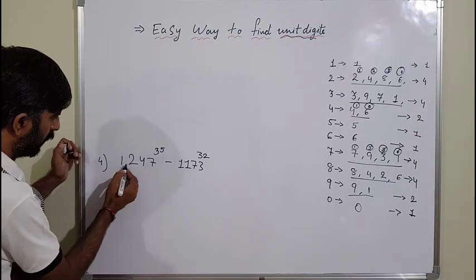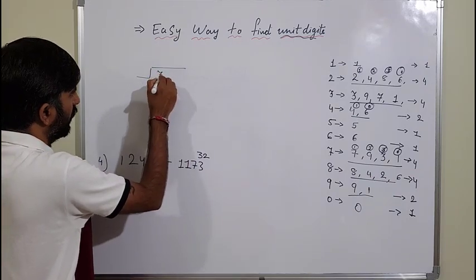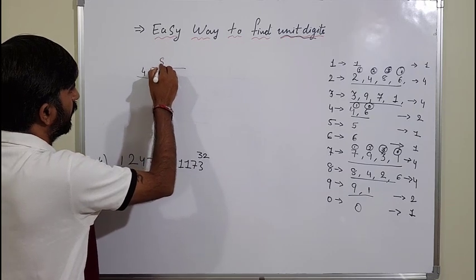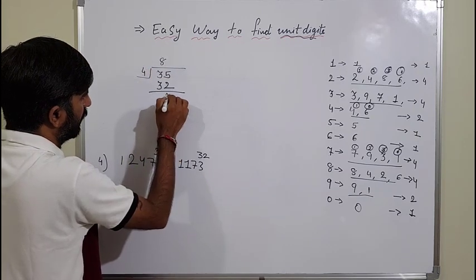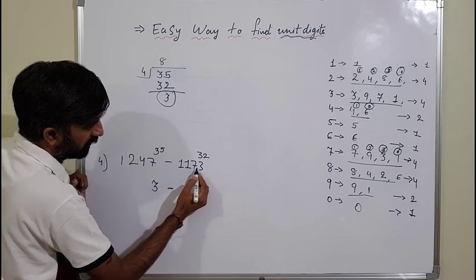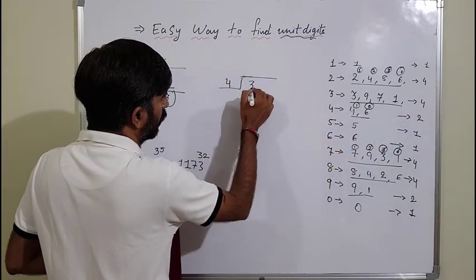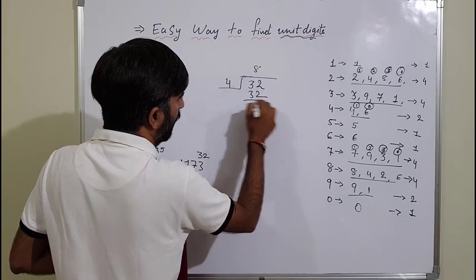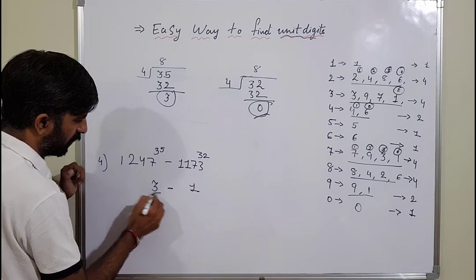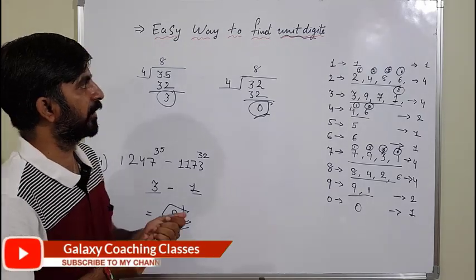Now let's try a subtraction type: 1247 raised to 35 minus 3 raised to 32. For 7 (4 possibilities), divide 35 by 4: 4 × 8 = 32, remainder 3 — unit digit is 3. For 3 (4 possibilities), divide 32 by 4: remainder 0 — unit digit is 1. Subtracting: 3 minus 1 gives unit digit 2. This way you can easily find the unit digit of any expression.